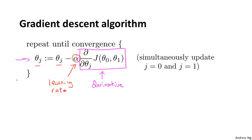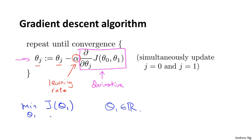In order to convey these intuitions, I want to use a slightly simpler example where we want to minimize a function of just one parameter. So we have a cost function j of just one parameter, theta one, where theta one is a real number. This gives us 1D plots which are a little simpler to look at. Let's try to understand what gradient descent will do on this function.